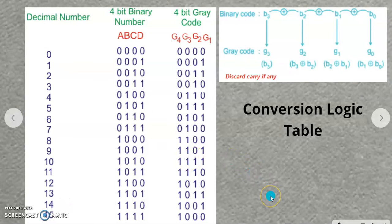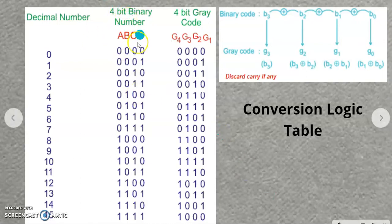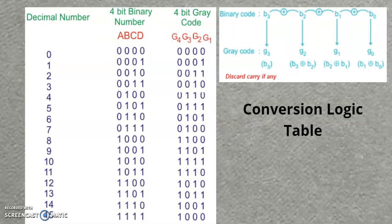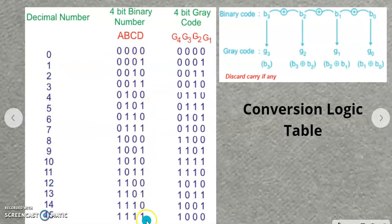In this problem, our job is to convert a 4-bit binary number to a 4-bit grey code. As there are 4 inputs A, B, C, D, and 4 output bits G1, G2, G3, G4 — for 4-bit binary input there are 16 possibilities. So we will write decimal 0 to 15 and convert all these decimal numbers into binary, writing all digits in binary from 0 to 15.